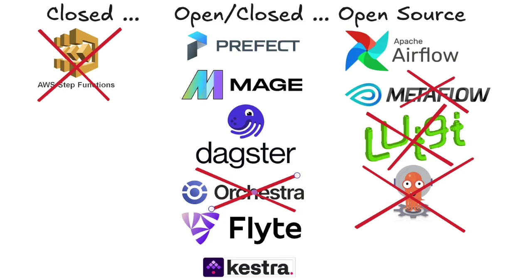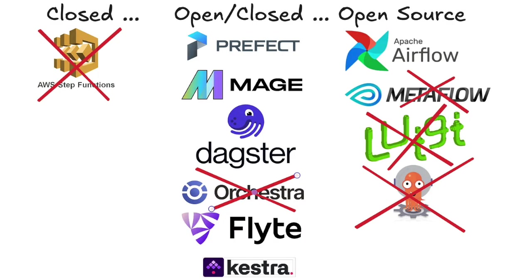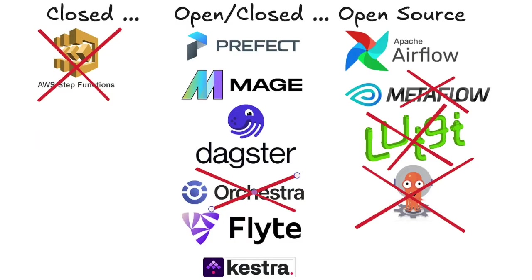I crossed off AWS Step Functions because they're totally closed. I crossed off Argo — it's basically Kubernetes-only, specifically for Kubernetes workflows; if you're a Kubernetes shop it might work, but for most people it won't. I crossed off Luigi because it's just not used often anymore — it used to be popular but no longer has a big community. I crossed off Orchestra and Metaflow as well — Orchestra has very unclear open/closed source boundaries, and Metaflow is narrowly focused on data science and ML workflows.